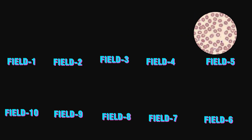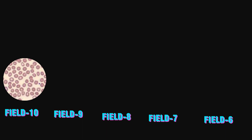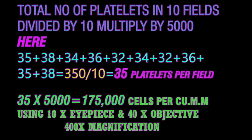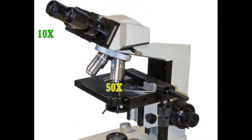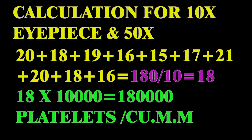The calculation differs according to the magnification because the size of the field differs, which affects the platelet number in the field. If using 10x eyepiece and 40x dry objective, count a minimum of 10 fields and take the average number of platelets per field. For example, if you get 35 platelets using 10x eyepiece and 40x objective, multiply by 5,000 — so 35 × 5,000 = 175,000 platelets per cubic millimeter. If using 10x eyepiece and 50x oil immersion, the calculation is number of platelets multiplied by 10,000.